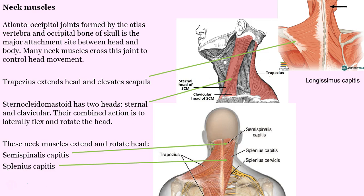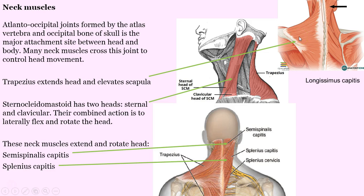Neck muscles — many of them pass across the atlanto-occipital joint. You have the atlas, which is the superior-most cervical vertebra, and it's articulating with the base of the skull called the occipital. So these neck muscles are crossing that joint. The trapezius, which is to the far right, is a massive muscle — it's going to extend the head and elevate the scapula. You can see the spine of the scapula, so when that muscle shortens it's going to elevate.